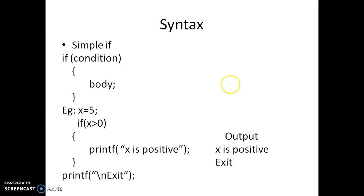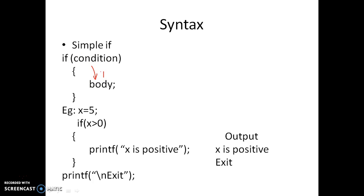First is the simple if, where you have only an if part. The syntax is: if an expression is evaluated and the expression is true, only then it enters the if body. This part of the code snippet will execute only if the expression turns out to be true.